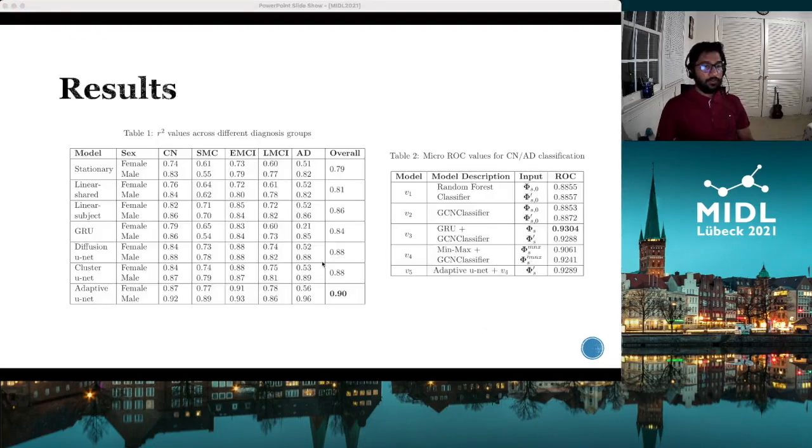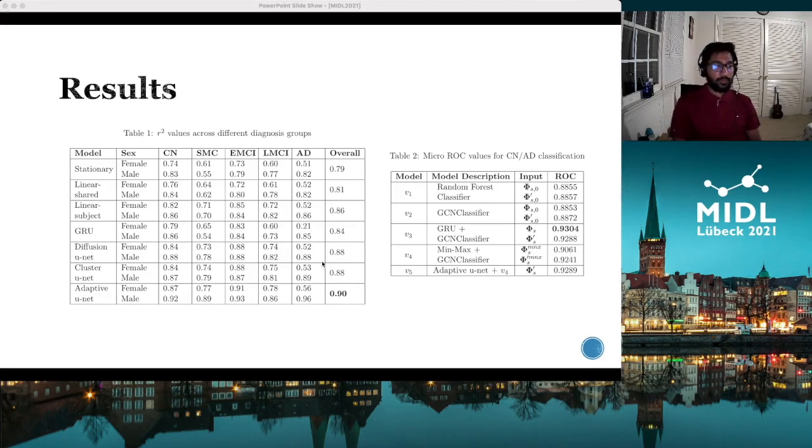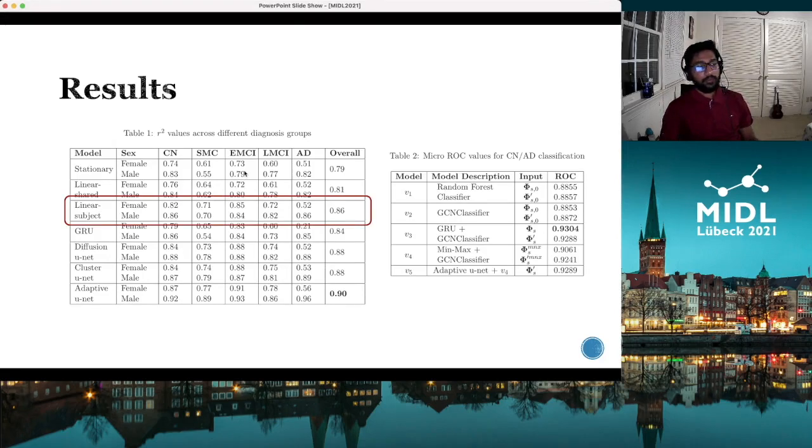To evaluate our method, we do two different kinds of experiments. One is regression analysis to evaluate how accurate the future predictions are from our model. And the second is classification experiments. In the regression analysis, we compute R square values and we compare our method with linear models and nonlinear models. For linear models, we assume a constant rate of change for amyloid progression. And this method gives us 0.86 R square value, which is pretty high.